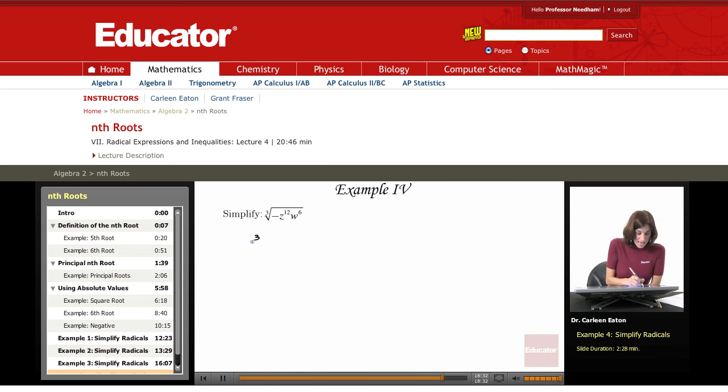So let's look first at this w to the 6th, because I don't have to worry about a negative sign with that, so that's simpler. Well, if I'm looking for the cube root, I need something, w to the something, to the 3rd power.